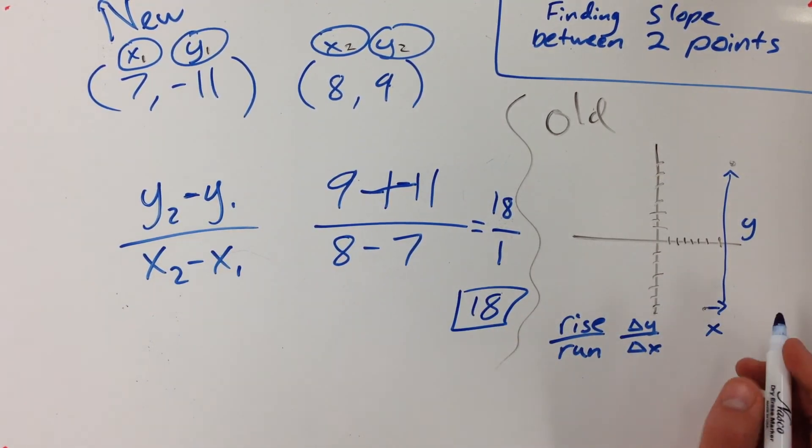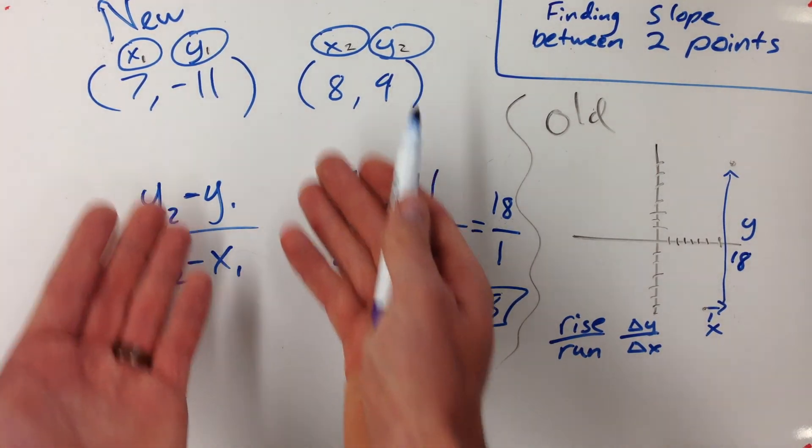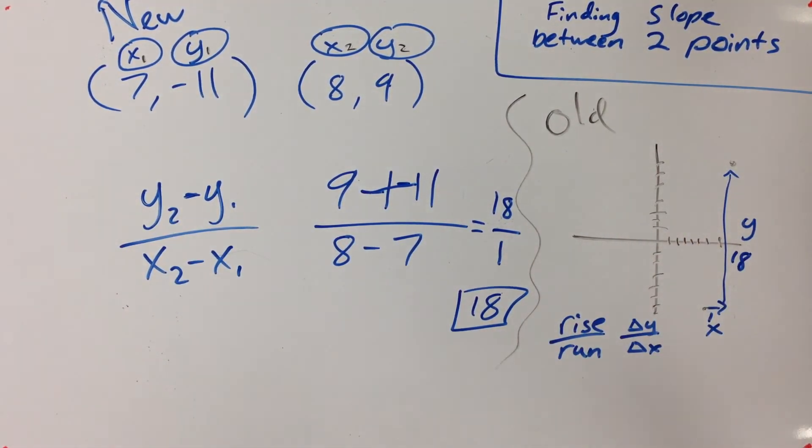Well, look at our graph. Yeah, we went over 1 and up 18. So really what we're doing isn't a new thing. It's just we can go straight from the points to the slope without having to go in between.